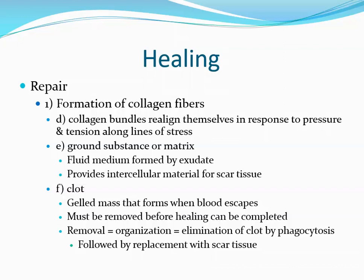In response to tension and pressure at the injury site, collagen bundles begin to realign themselves along lines of stress, providing additional strength without requiring new collagen production. The ground substance or matrix — formed by the exudate — provides the intercellular material for scar tissue development. At first it has a semi-solid consistency, but fibroblasts secrete mucopolysaccharide into it to change its consistency. This fluid also helps promote collagen fiber production and cross-linking.